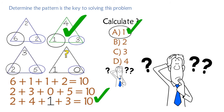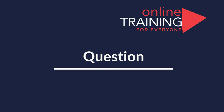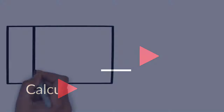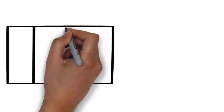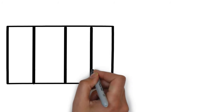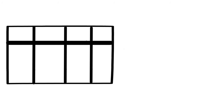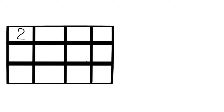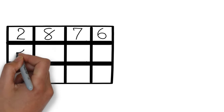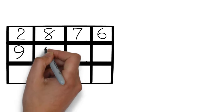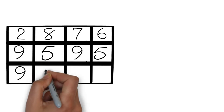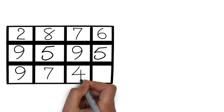Here's one of my favorite questions because it is very frequently used on a test. You're presented with a 4 by 3 matrix; each cell in the matrix has numbers. For example, the first row has numbers 2, 8, 7, and 6. The second row has numbers 9, 5, 9, and 5. The third row has numbers 9, 7, 4, and the number in the bottom right corner is missing — this is exactly what you need to calculate.